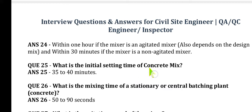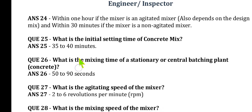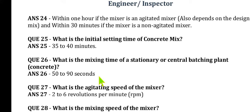Question 25: What is the initial setting time of a concrete mix? The initial setting time is 35 to 40 minutes. Question 26: What is the mixing time of stationary and central batching plant concrete? This is a very important point — the mixing time of concrete is 50 to 90 seconds. This should be noted.